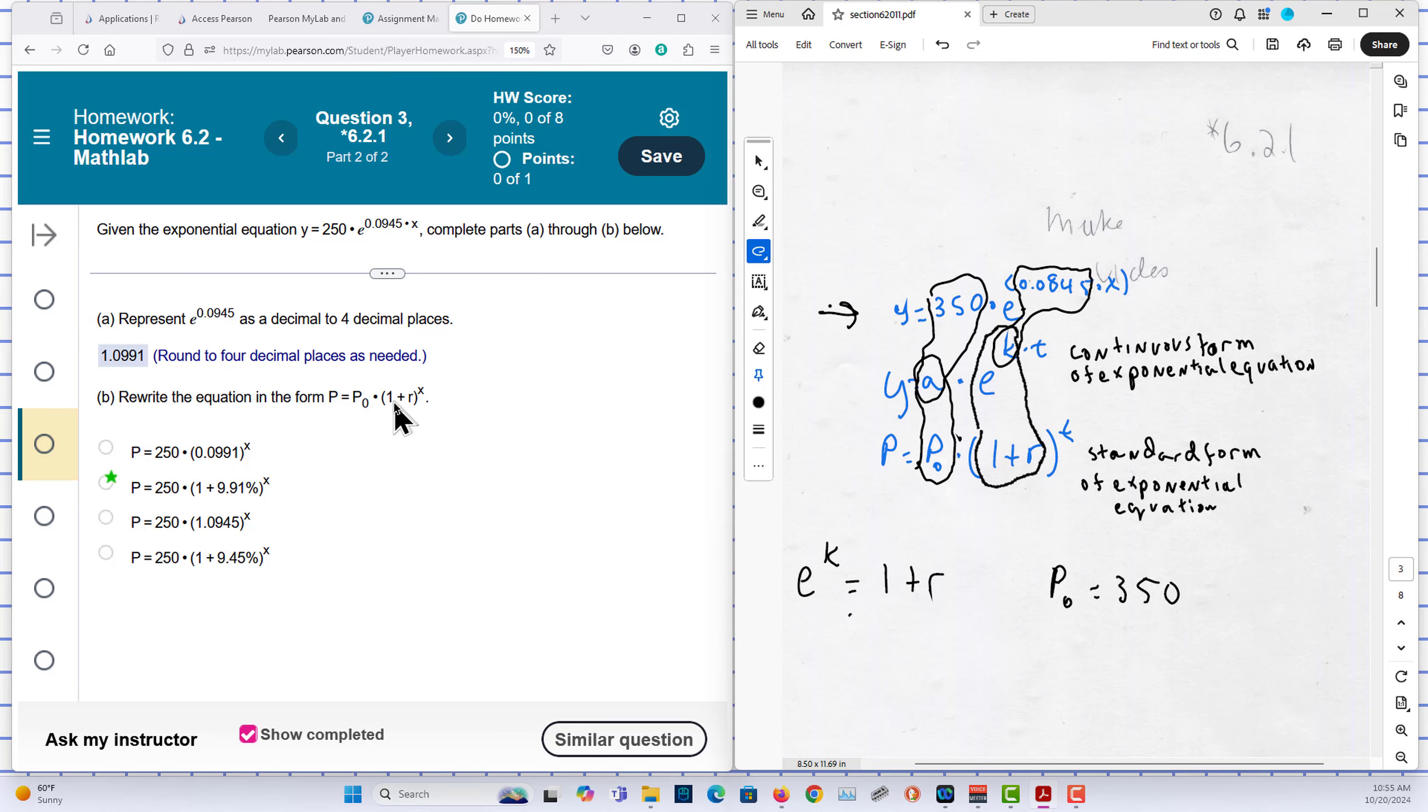And here we have 1 plus R. You can see that 1 plus R maps to e to the k here. So in this case, for my problem, I'm going to have e raised to the 0.0845 is equal to 1 plus R.